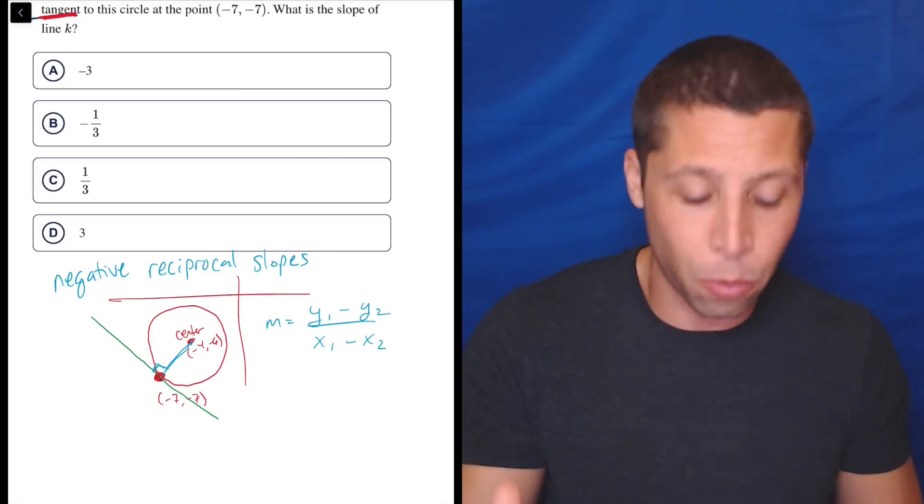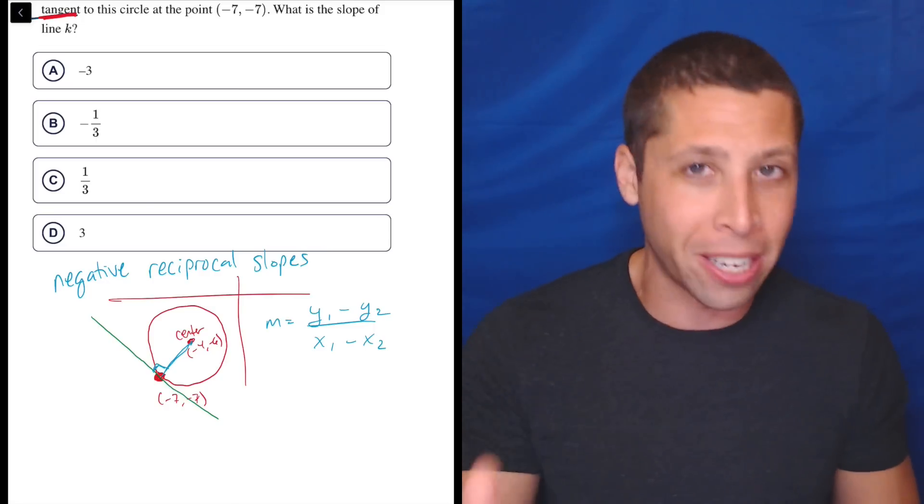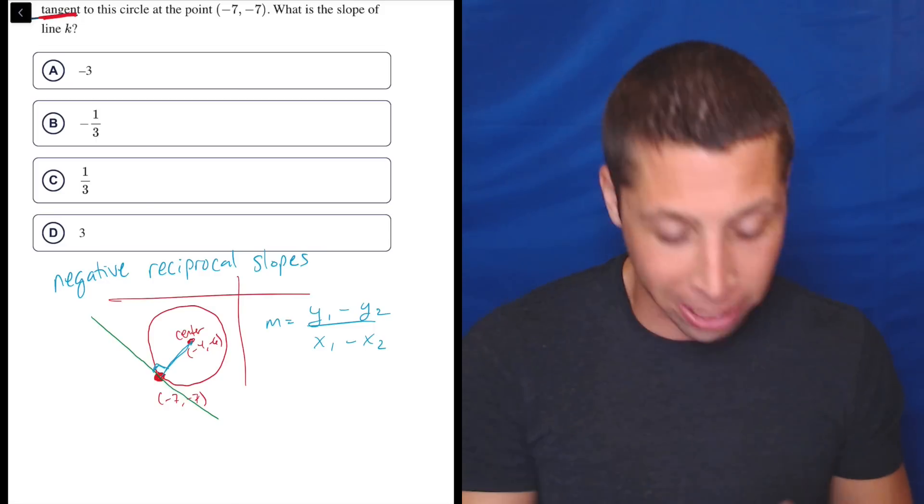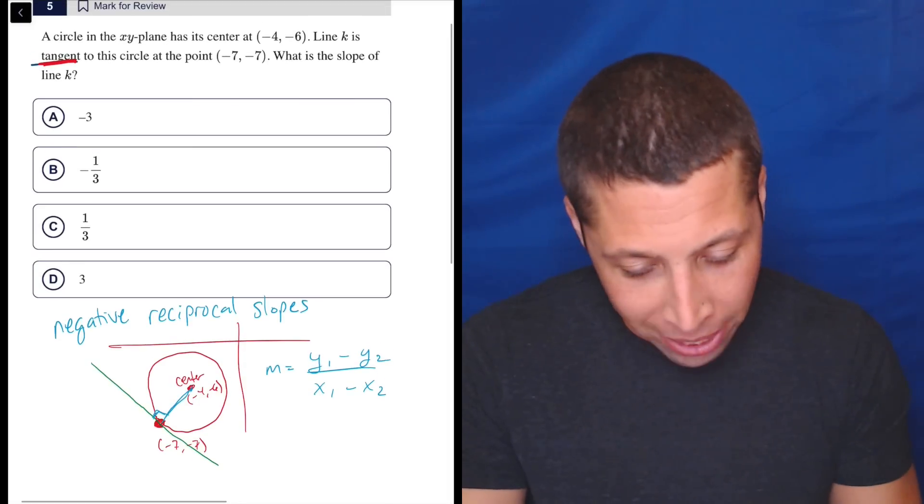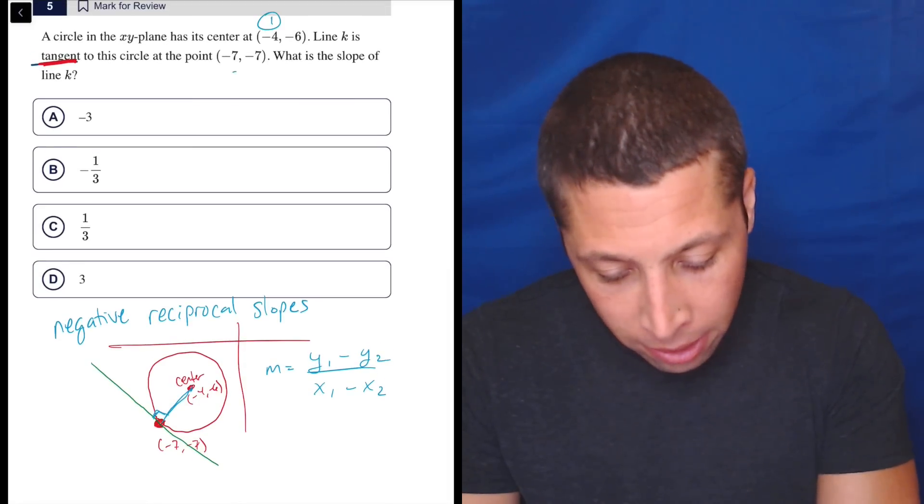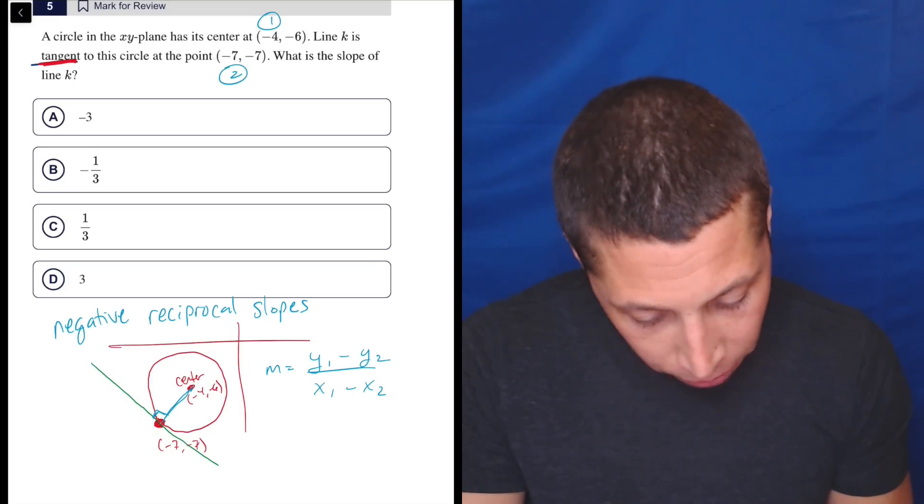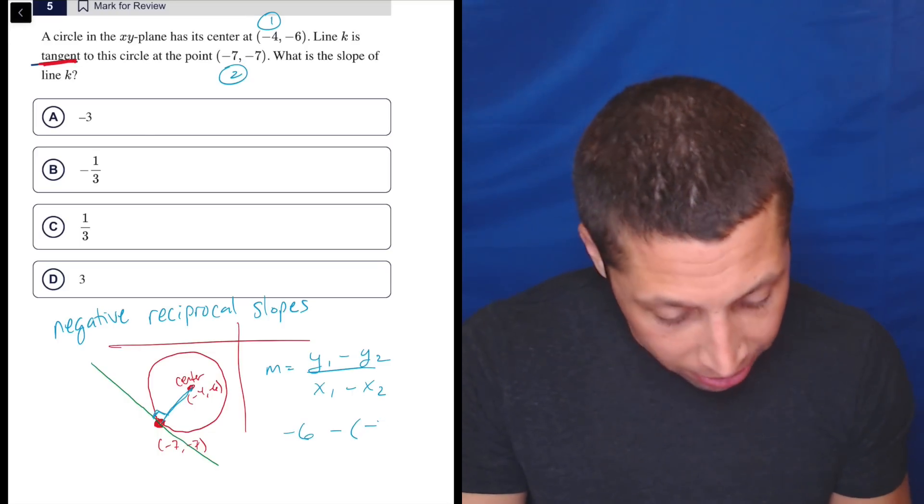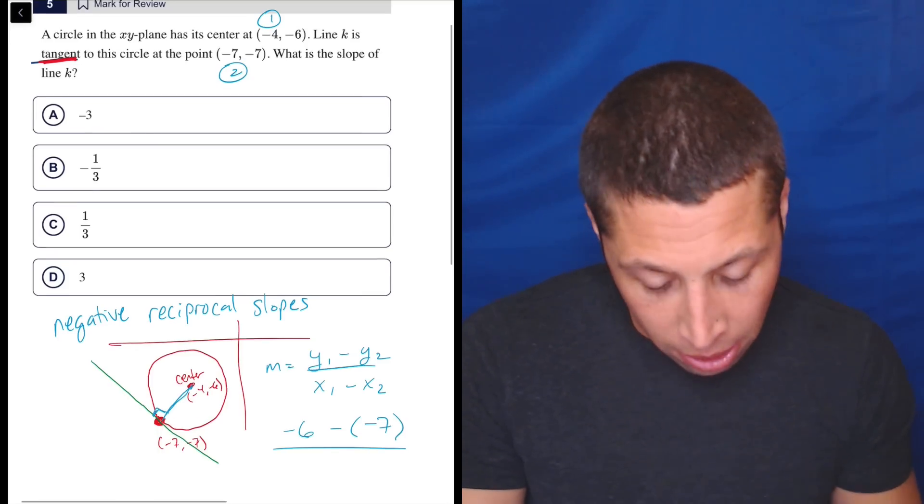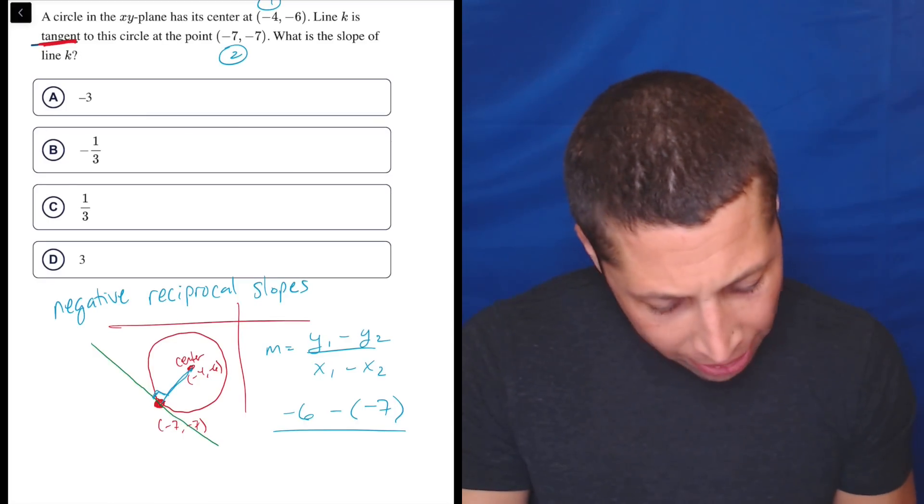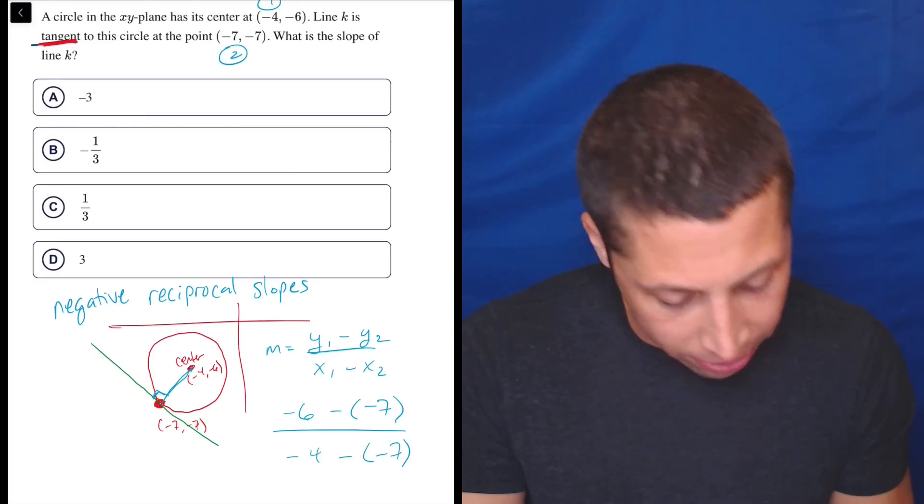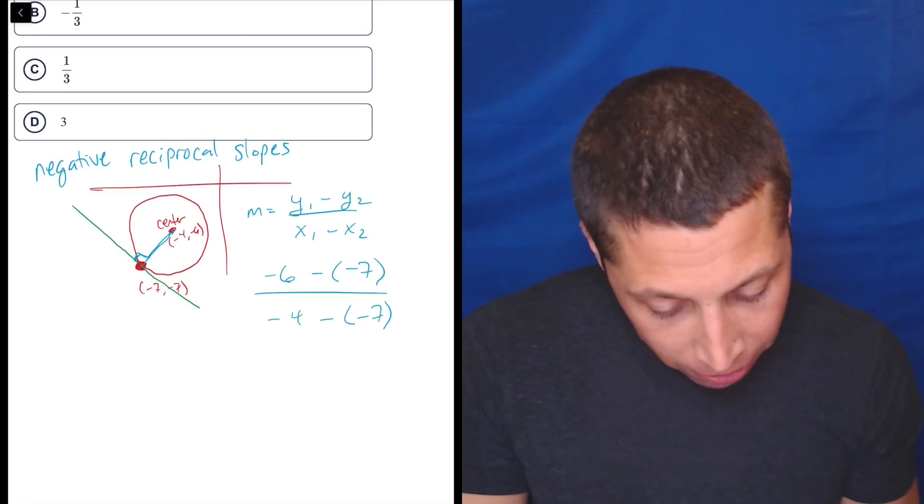Whatever point we choose as point 1, it's first on the top, first on the bottom. Whatever point we choose as point 2, it's second on the top, second on the bottom. So let's just do it. This is point 1, this is point 2. So Y first: negative six minus negative seven. Keep track of those negatives. And then X is negative four minus negative seven.